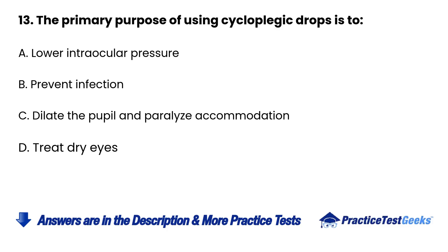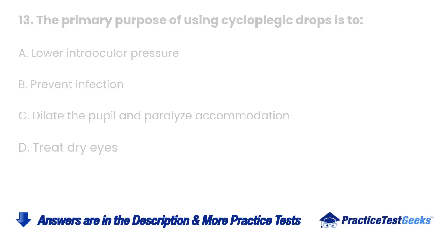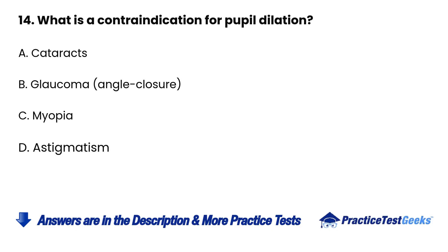13. The primary purpose of using cycloplegic drops is to A. Lower intraocular pressure B. Prevent infection C. Dilate the pupil and paralyze accommodation D. Treat dry eyes